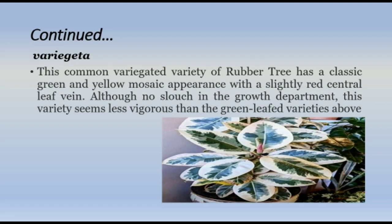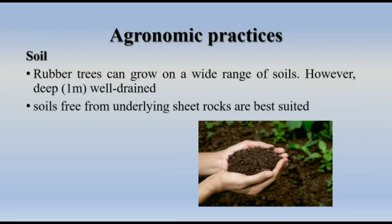Agronomic practices — Soil: Rubber trees grow on a wide range of soils; however, deep (one meter), well-drained soil free from underlying sheet rocks is best suited for cultivation.